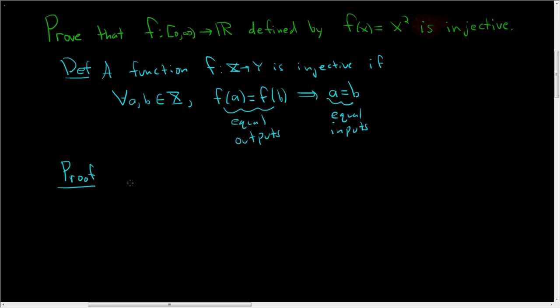So to use this definition we have to start by supposing that we have f(a) equal to f(b) for some arbitrary a, b in the domain of f. In this case this is our big X, our capital X. So a, b will live inside the interval from 0 to infinity, which includes 0.